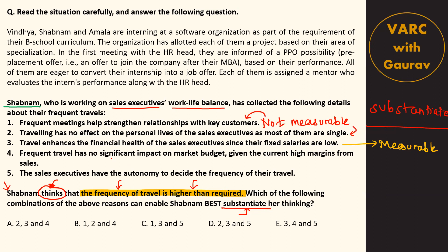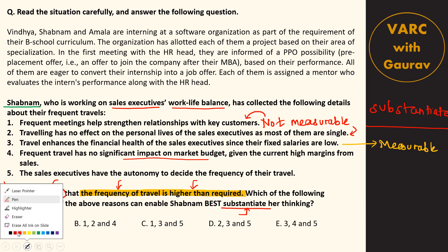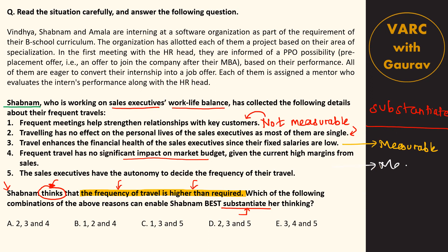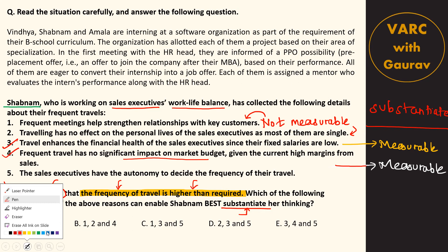Sentence 4 says frequent travel has no significant impact on the marketing budget - the travel expenses are very miniscule, maybe 1-2-3% of the overall budget. Once again, this is also pretty much tangible and measurable. You can look at the full sales and margins numbers versus the travel spending. Either Shabnam will stand vindicated or she will stand corrected - she will be proven wrong. Sentence 4 is also a very good candidate. Now sentence 5, which naturally rounds out the answer.